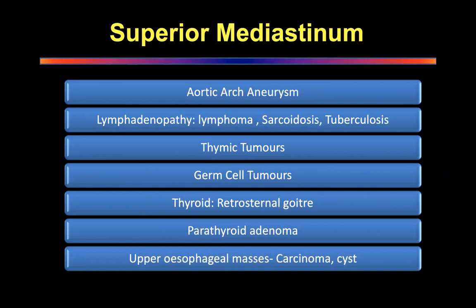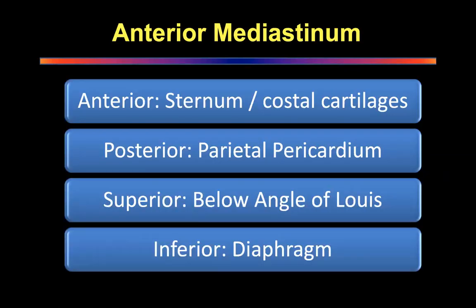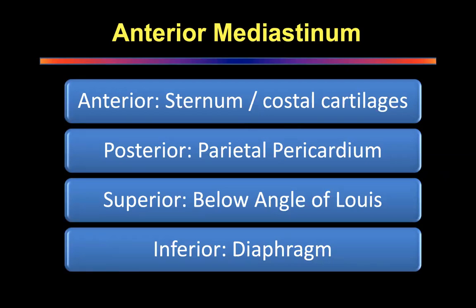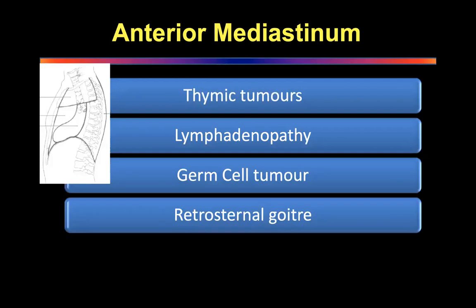Parathyroid adenomas can also occur there, along with upper esophageal masses. It's important to know these differential diagnoses based on location. The borders of the middle mediastinum: anteriorly parietal pericardium, posteriorly parietal pericardium, superiorly angle of Louis, and inferiorly the diaphragm. You must talk about all four borders — anterior, posterior, superior, and inferior.